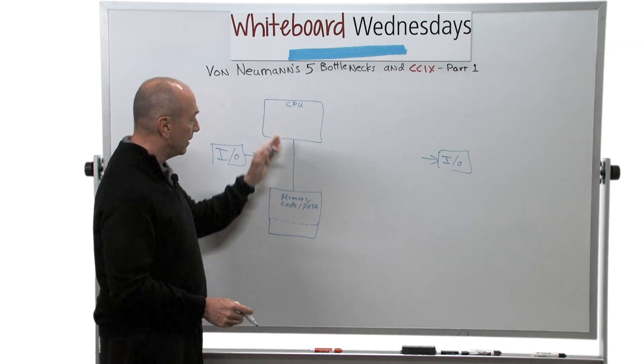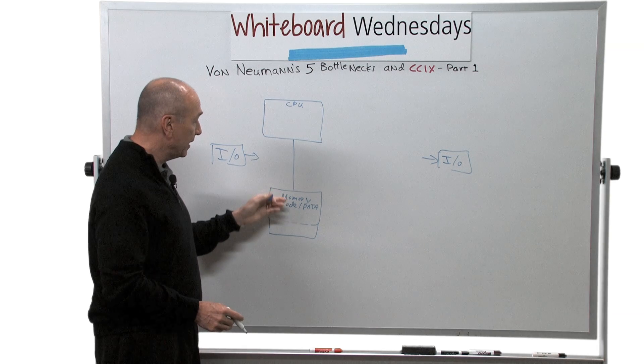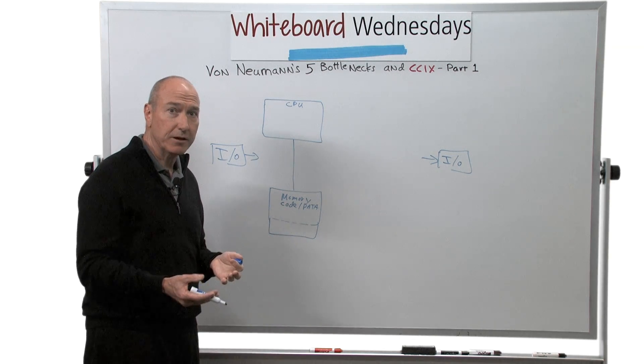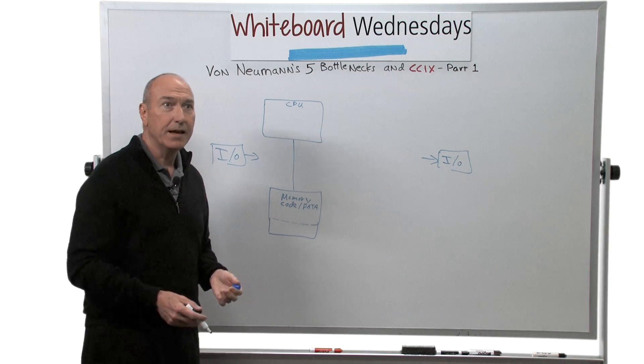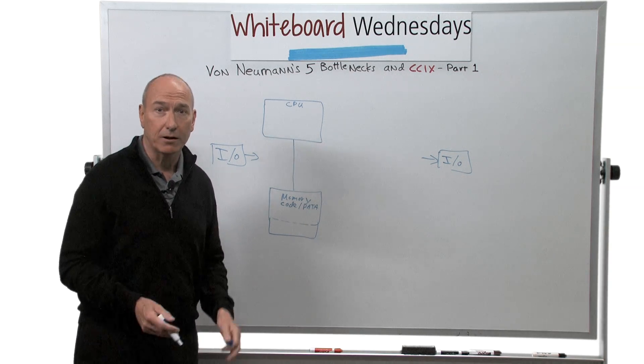And this was the memory bottleneck, because every time the CPU wanted to do something, it had to go to memory to access both the program code and the data. And a famous paper was written at the time and called this the von Neumann bottleneck.